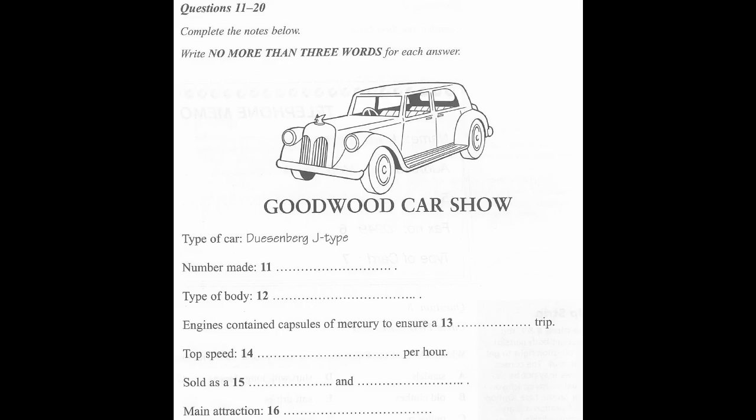How many were there? Well, only 473 Duesenberg J-types were ever built. And the model here is one of the rarest. Each had a short 125-inch chassis or framework and the body was always in the form of an open two-seater. The technology behind the car's 6.9-litre engine was extraordinary. It featured capsules of mercury in the engines to absorb vibration and provide an incredibly smooth ride. In fact, these cars offered unparalleled performance. In an age when 160 km per hour was considered very fast, the Duesenberg promised a top speed of 180 km per hour and could do 140 km per hour in second gear.